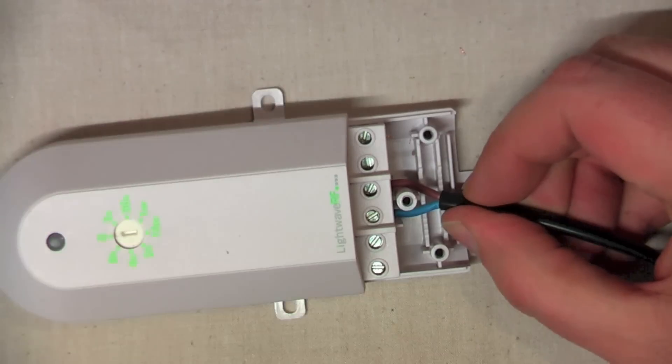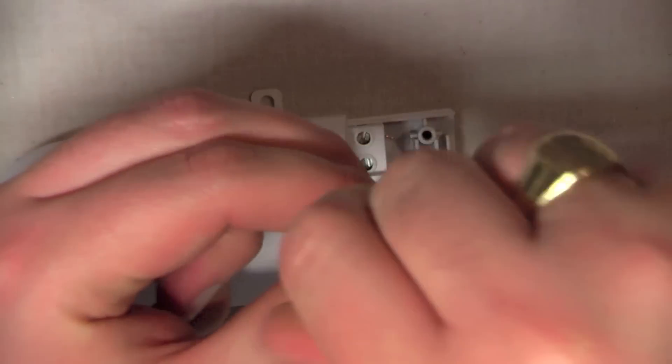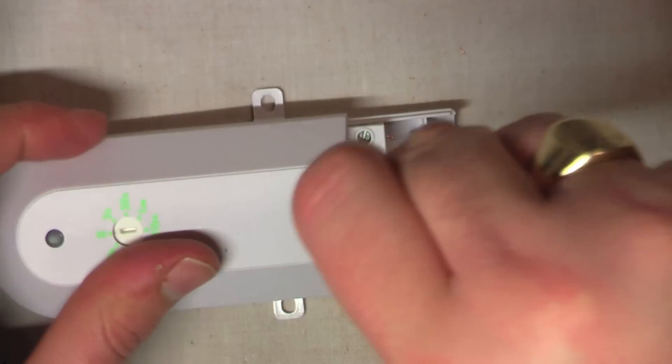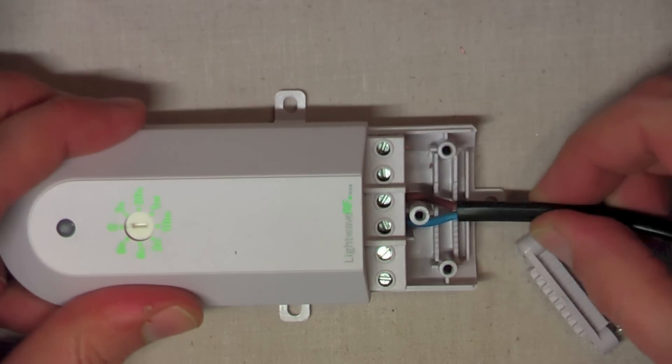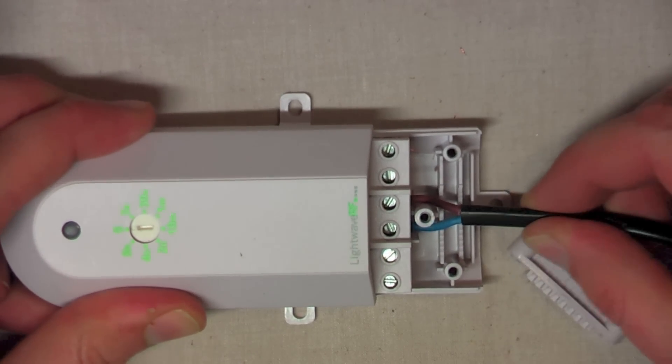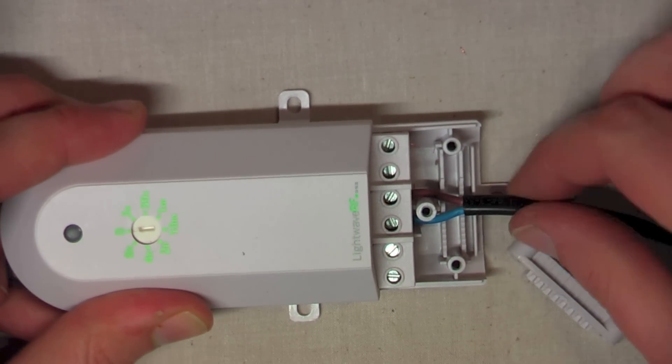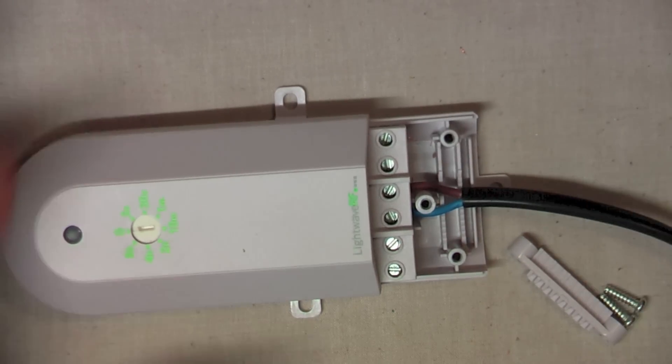Again, nice and tight. And then we'll pop the blue into the neutral side. Just give it a little waggle. And we'll tighten that screw there. Now, give it a nice gentle tug. Just make sure it's nice and secure. That is, we don't want to pull it too hard. And we don't want that to come out of those terminals.